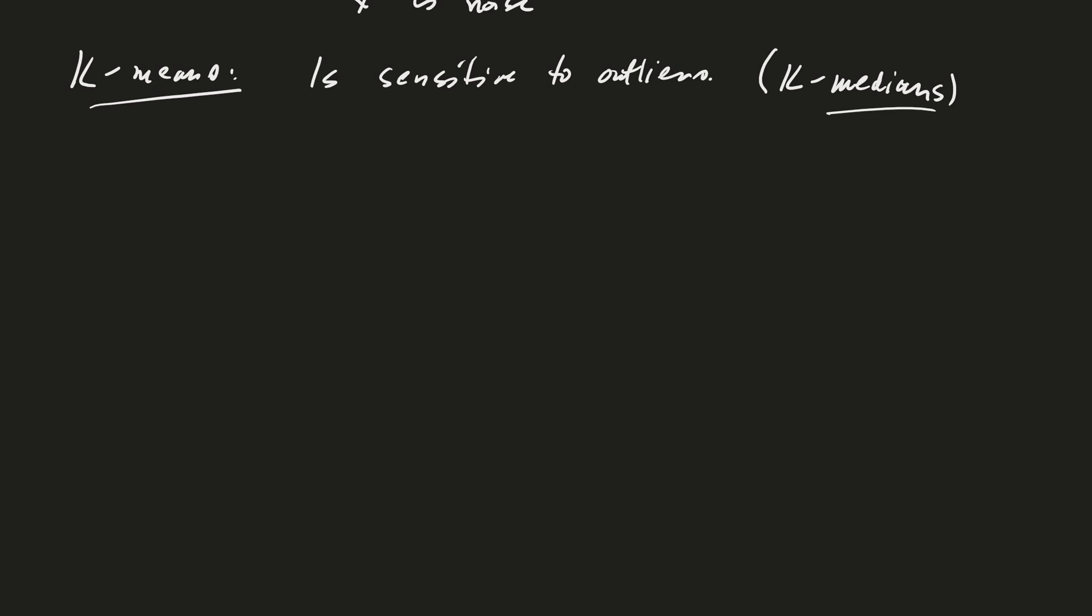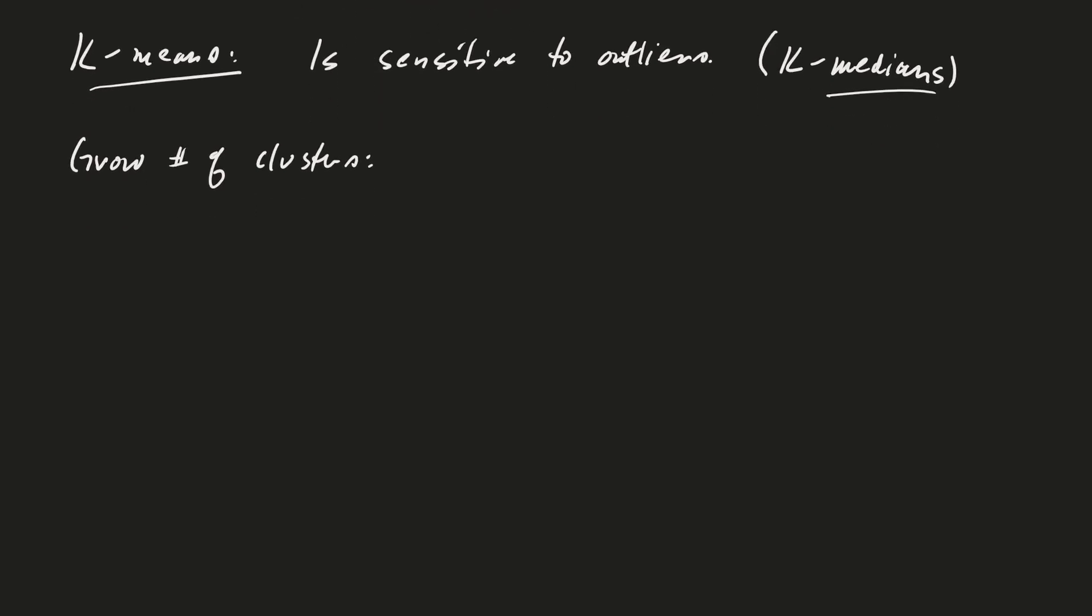Similarly, is there a way to grow the number of clusters so that you don't have to specify k? And there is. The idea is pretty straightforward. At each stage, keep track. At each iteration, I should say, or every once in a while, compute the distortion error.